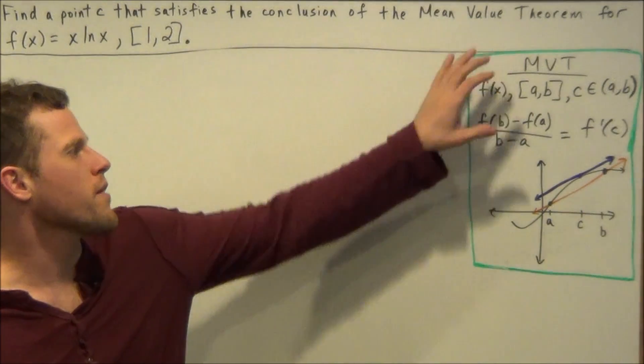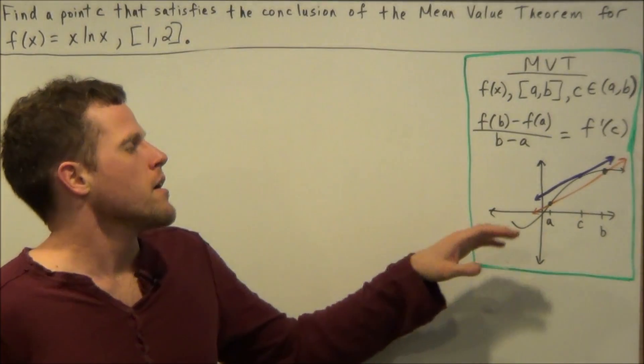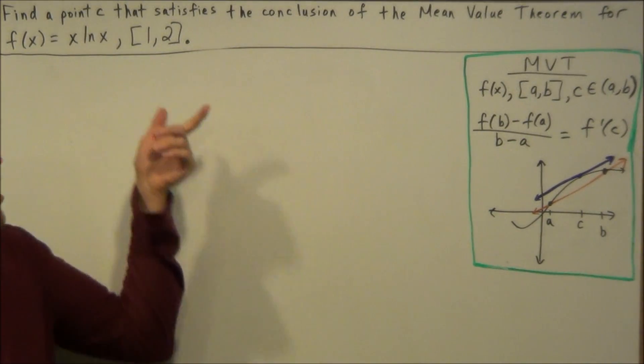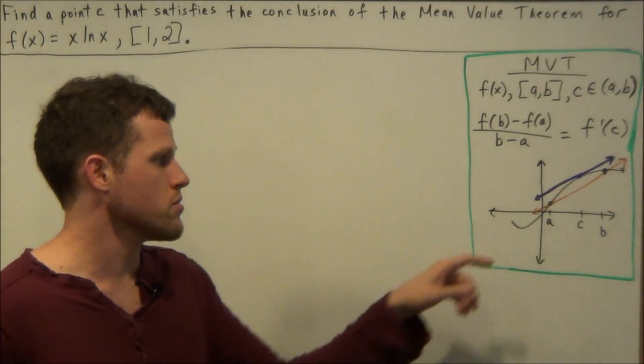So the conclusion of the mean value theorem states that at some point C, where C has to be between our two endpoints, so our answer should fall between 1 and 2.